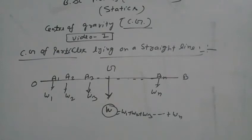And the bodies of masses w1, w2, w3, dot dot dot, wn are fixed at A1, A2, A3, dot dot dot, An. Let G be the point where lies the center of gravity.